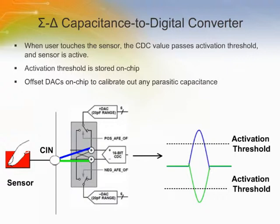The activation thresholds are stored in on-chip registers. When the CDC value passes through a threshold, the sensor is activated. There are two programmable DACs on board the AD7147 to null the effect of any parasitic capacitance on the CDC measurement. This parasitic capacitance is the capacitance of the sensor itself; only the change in capacitance due to user interaction is of interest to the device.